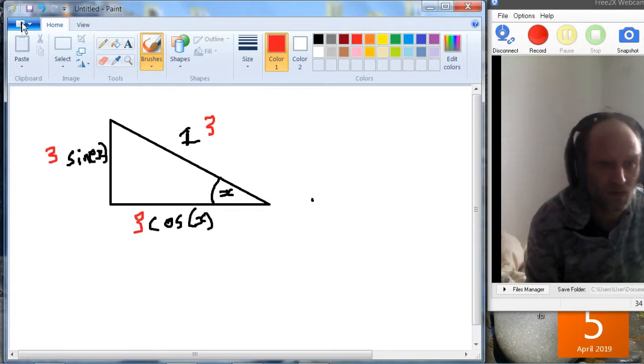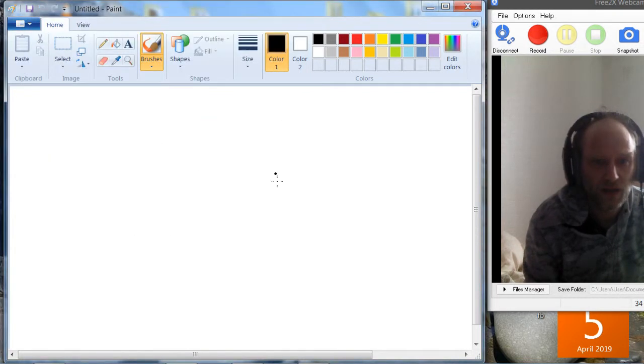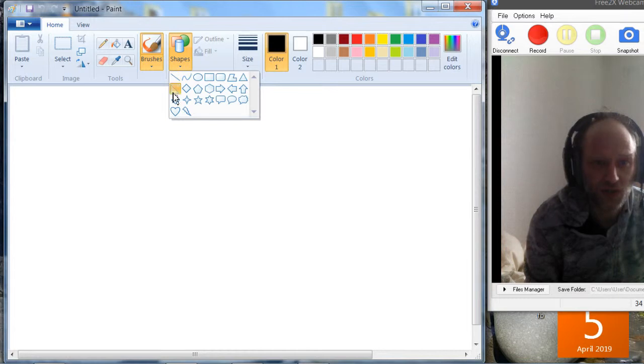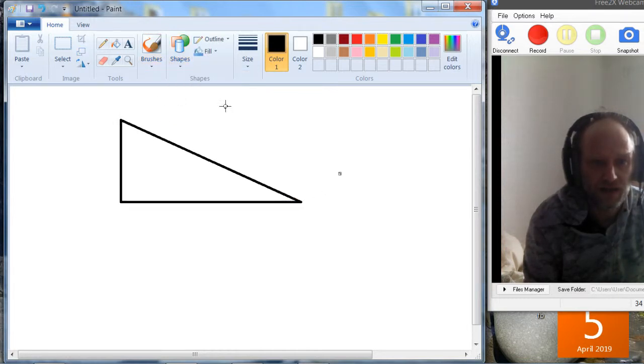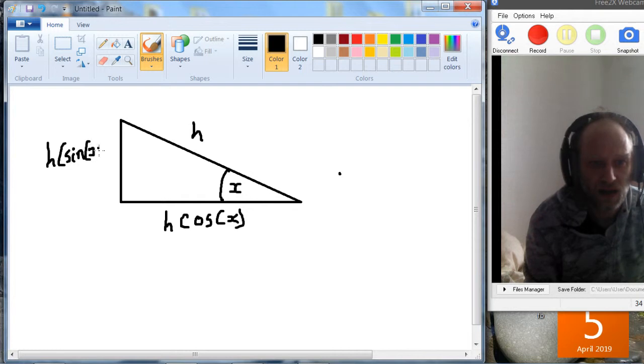So actually, what we could do is have the equations the other way, and just say, okay, for a triangle where we know x, if we know h, then this would be h times cos x, and this would be h times sin x. Yeah, I don't know if you need the brackets. You don't really need the brackets. So there we go.